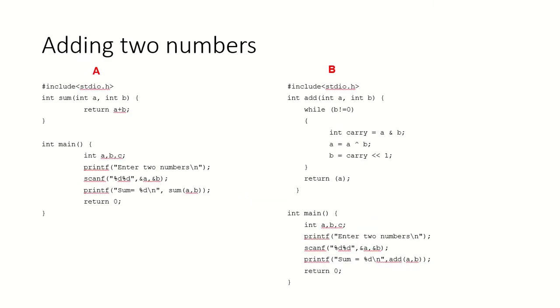Suppose there are two algorithms doing the same task. Both algorithms A and B are performing the task of adding two numbers. Look at this first algorithm. There are three variables that have been declared. We ask the user to input two numbers, scan them, and then print the sum by calling a function sum of A and B.